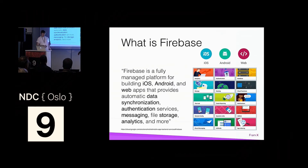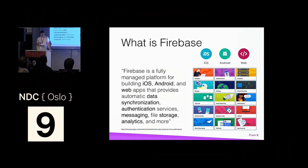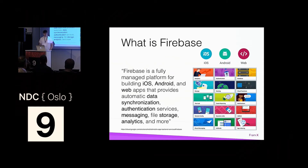Firebase was developed from around 2012. It started as a real-time database, which is a JSON key-value store where you can push your data and synchronize between clients within milliseconds. It also supports offline — each client can work offline and get synchronized when they're online again. It was acquired by Google some years back, and at last year's Google I/O conference it was announced as the unified platform for Android, iOS, and web mobile apps.